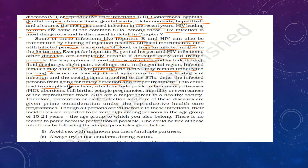If left untreated, STIs can lead to several complications, including pelvic inflammatory disease (PID), abortions, stillbirths, ectopic pregnancy, infertility, or even cancer in the reproductive tract. STIs are a major threat to healthy societies; therefore, prevention, early detection, and cure of these diseases is a prime consideration under the reproductive healthcare program.